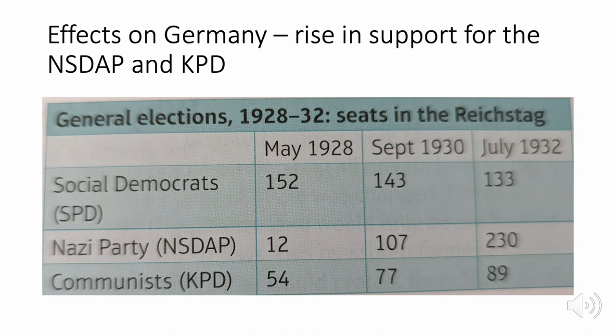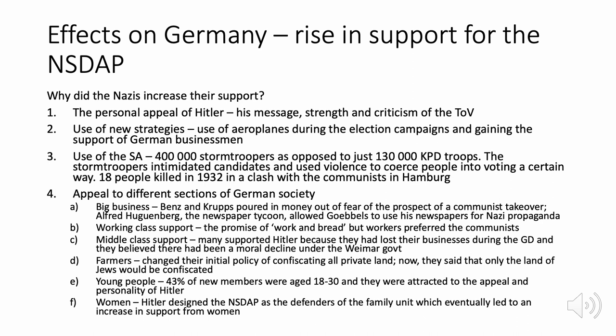The Nazi rise in support was partly due to the Wall Street Crash, but also factors within the Nazi Party itself. These included the personal appeal of Hitler — his charisma, charm, and personality — the use of new election strategies such as aeroplanes during campaigns to promote the party, and the use of stormtroopers. With 400,000 stormtroopers compared to the communists' 130,000, they intimidated rival candidates, used violence, and killed 18 people in a 1932 clash in Hamburg.